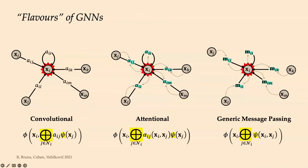Most GNN architectures fall into three categories. The most generic is message passing: every node collects information from adjacent nodes along edges and transforms it. A less general case is attentional architectures: information is aggregated using weights computed from features. The simplest are convolutional architectures — developed at EPFL by Michael Defferrard, a PhD student of Pierre Vandergheynst — which reduce to classical CNNs on a grid and use aggregation dependent only on graph structure, not features.